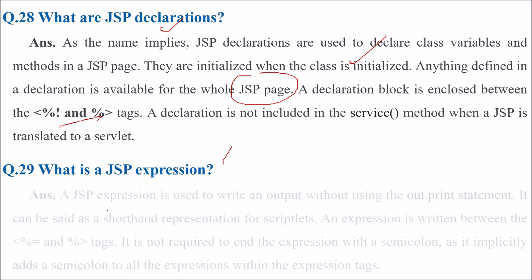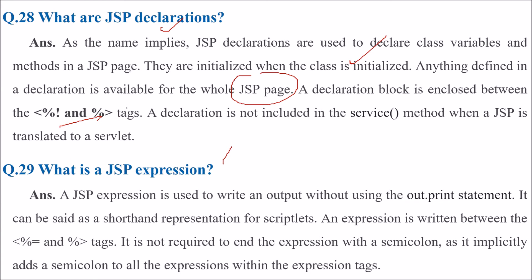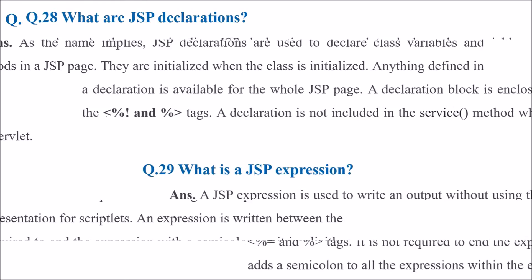What is a JSP expression? A JSP expression is used to write output without using the out.print statement. It can be said to be a shorthand representation for scriptlets. An expression is written between the equals-sign tags, and it is not required to add a semicolon, as the container implicitly adds a semicolon to all expressions within the expression tags.